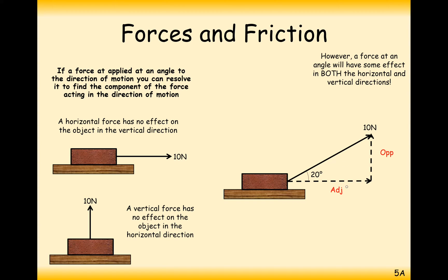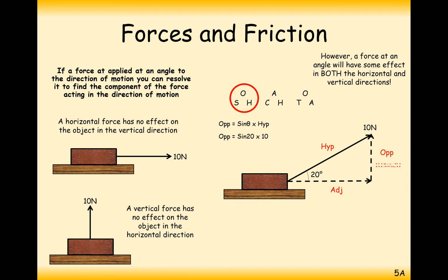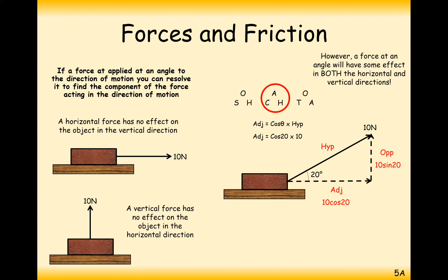The force we want to resolve always goes on the hypotenuse of the right-angled triangle. We have the opposite side and the adjacent side. Using SOH CAH TOA: the vertical component is 10 sin 20, and the horizontal component (adjacent side) is 10 cos 20. The force on the vertical component equals 10 sin 20, and the force on the horizontal component equals 10 cos 20.